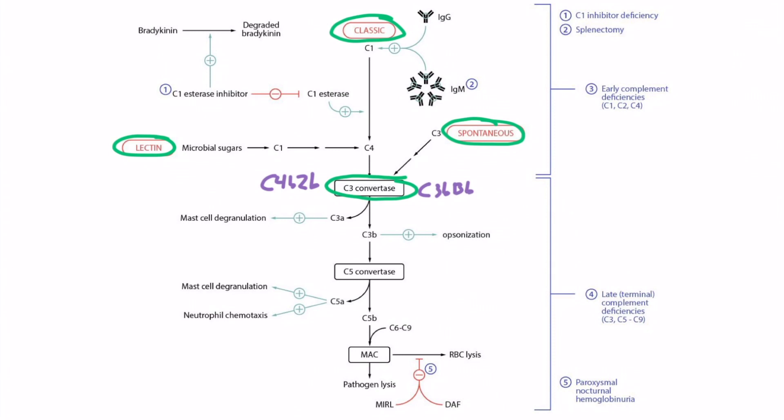What you need to know is that all pathways lead to a C3 convertase, and once created, C3 convertase will take C3 and convert it to C3A and C3B. C3A can then stimulate mast cell degranulation, as discussed in section 2. C3B has two roles: one is to act as an opsonin and upregulate opsonization, meaning it helps phagocytes phagocytose their pathogens.